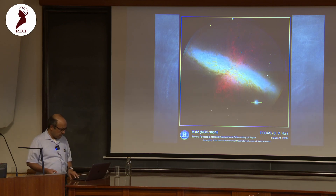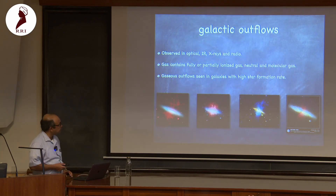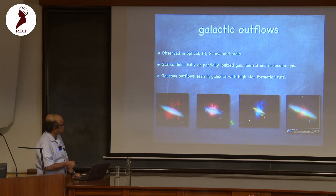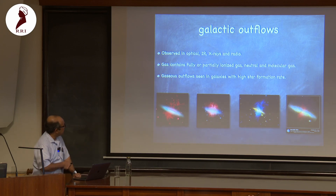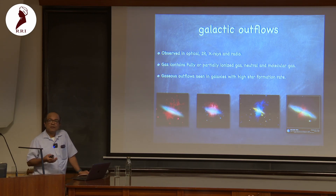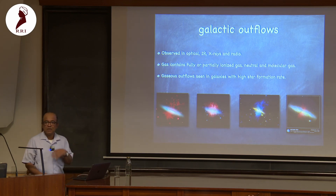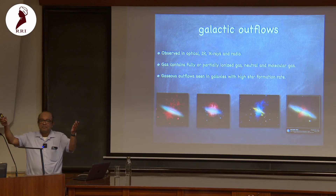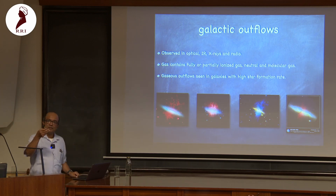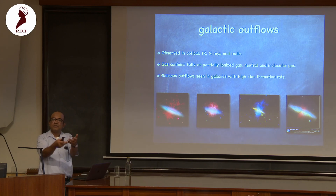This phenomenon is not only seen in optical; it's also seen in other wavelengths. For example, this is the same galaxy M82 seen in X-rays, and this is infrared. Since emission at different wavelengths corresponds to different physical mechanisms, they give us different clues about the same physical process. This is something astronomers do very often — look at the same object in different wavelengths, like a blind man looking at an elephant.